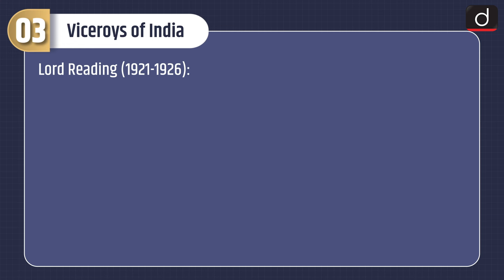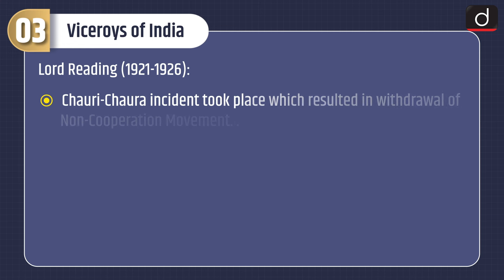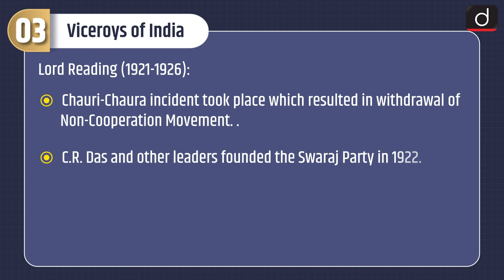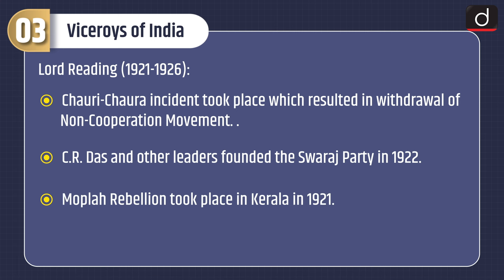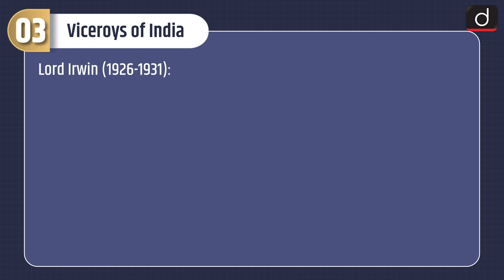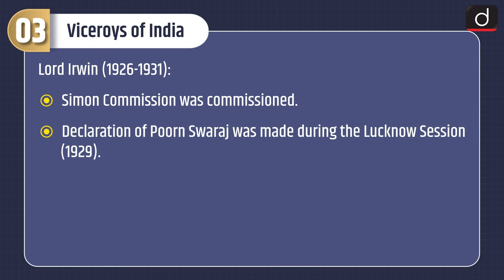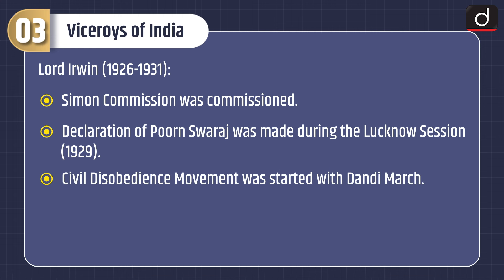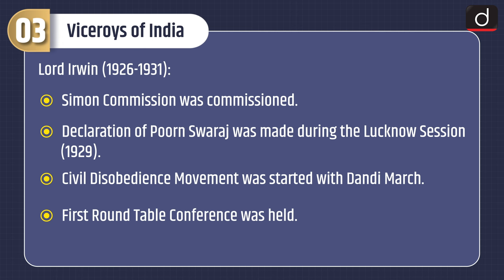Lord Reading, 1921–1926: the Chauri Chaura incident took place, which resulted in the withdrawal of the non-cooperation movement. C.R. Das and other leaders founded the Swaraj Party in 1922. The Moplah rebellion took place in Kerala in 1921 and the Press Act of 1910 and the Rowlatt Act were repealed. Lord Irwin, 1926–1931: the Simon Commission was appointed. The declaration of Purna Swaraj was made during the Lahore session in 1929. The Civil Disobedience Movement was started with the Dandi March. The First Round Table Conference was held and the Gandhi-Irwin Pact was signed.